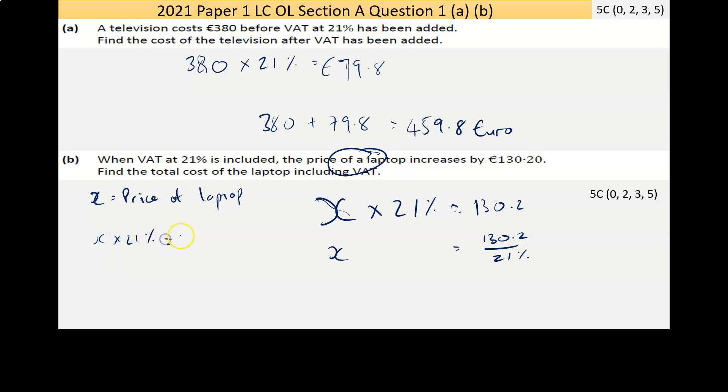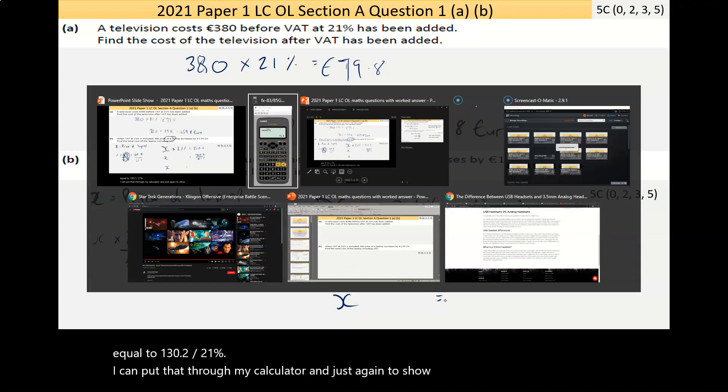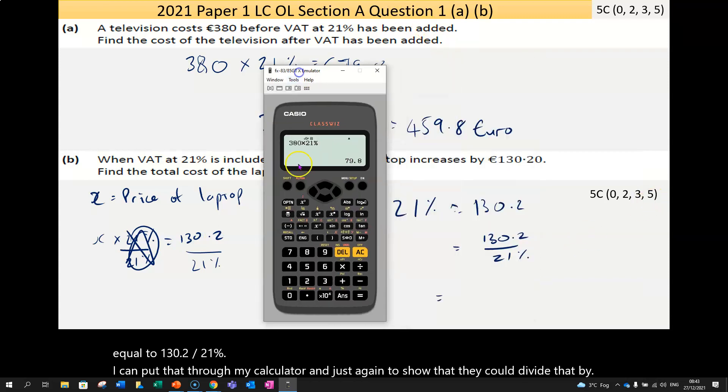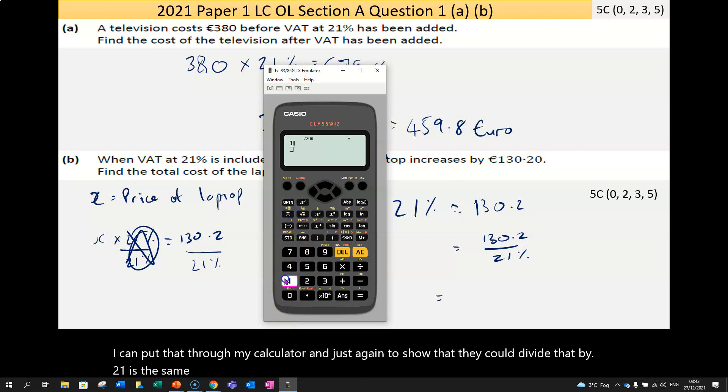From an algebraic point of view, what I'm actually doing is getting rid of the 21%, and you can do that by dividing by itself - you can always get rid of anything by dividing by itself. If I do to one side, I have to do it to both. The consequence is this goes away; you're left with the calculation x equals 130.2 over 21 percent. I can put that through my calculator, so it's fraction 130.2 on the bottom, 21 percent.